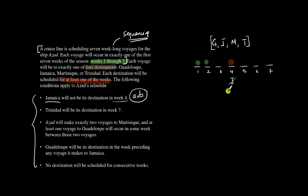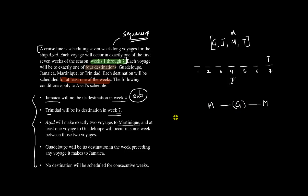The second rule: T will be the destination in week seven — this is a very strong rule. We have one piece fixed: T is in position number seven. The third rule states Azad will make exactly two voyages to Martinique, and at least one voyage to Guadeloupe will occur in some week between those two voyages. So we have exactly two M's, and between those two M's there must be at least one G.